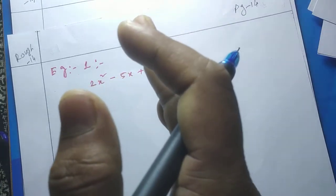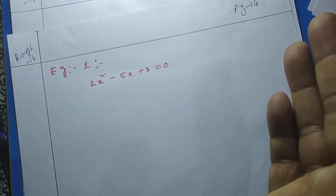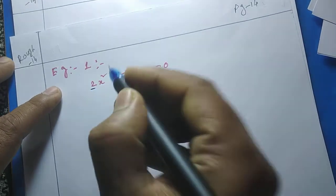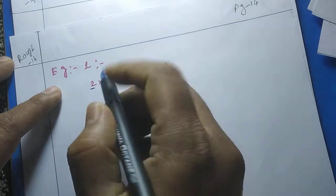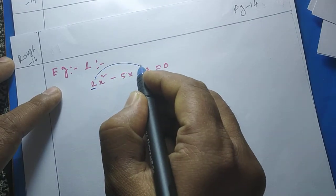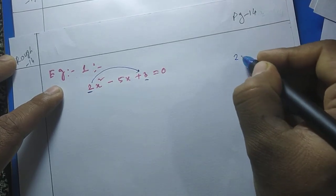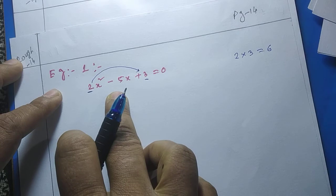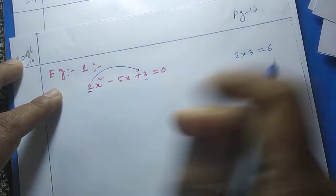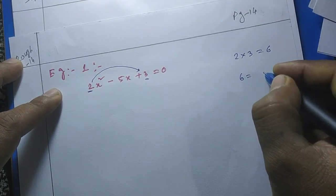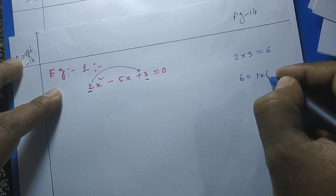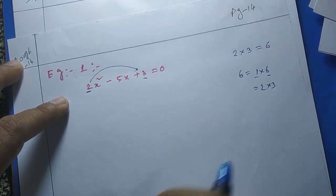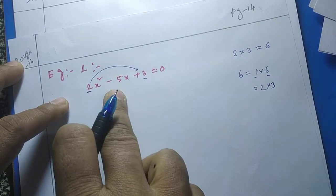We already know how to do the middle term factorization because we have been learning it from class 8. Here the coefficient of x² is 2 and the constant part is 3. First we multiply the coefficient of x² by the constant part: 2 × 3 = 6. Now we have to split 6 in such a way that we get −5 in the middle. This 6 can be factorized as 1 × 6 and 2 × 3. Taking 1 and 6, we can get −5 by minus or plus.